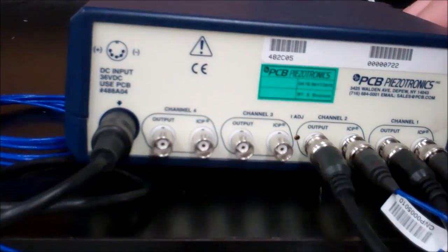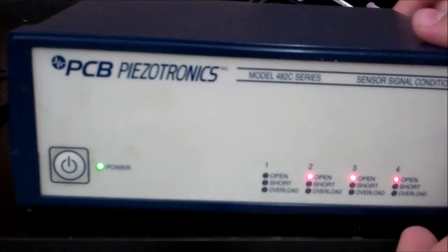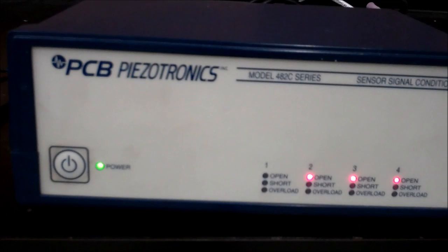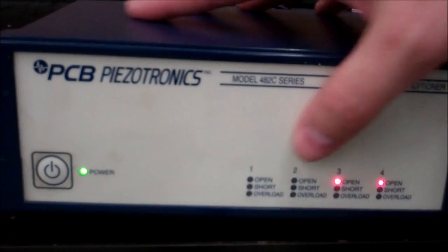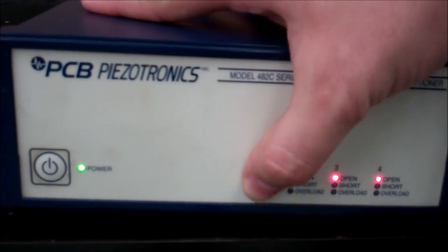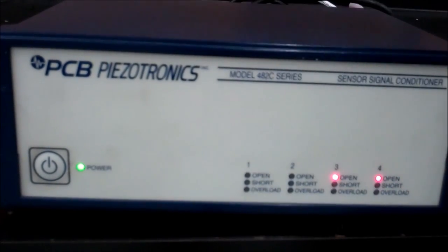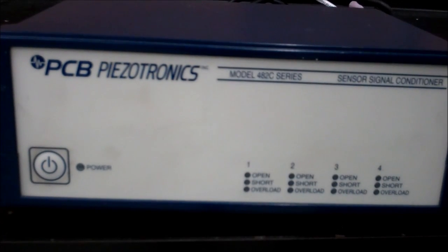And that's how you would connect two accelerometers. And then on the front, you should have two lights without the open indicator lit. And you can see I have two accelerometers hooked up, and none of the lights are showing any errors. Once you're done, turn the power off and disconnect everything.